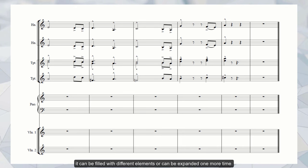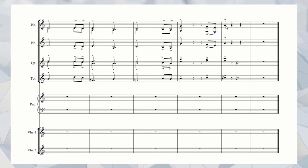However, it can be filled with different elements or can be expanded one more time. For example, let's expand the lower portion of the melody. The second and the fourth horns take the chord tones of the harmony. Starting from the fourth bar, the horns move in octaves.